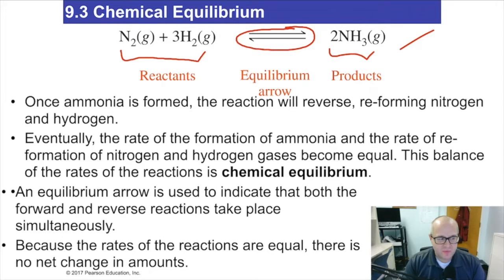What is equal is the rate of the forward reaction and the backward reaction. It's the rates of the reaction that are equal. The concentrations on either side of the arrow may or probably aren't equal. It's the rates of the reaction that are equal.